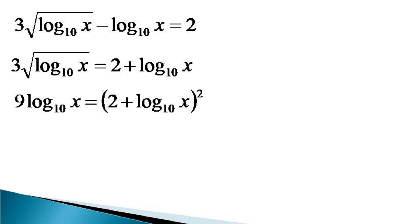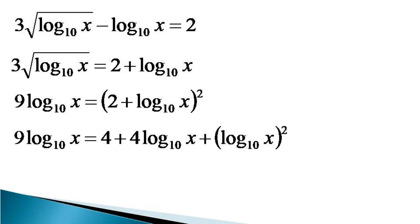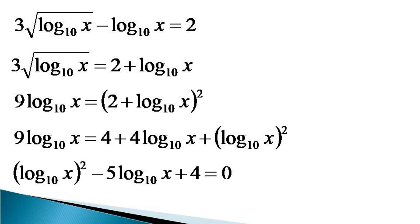Expanding the square on the right hand side, we get 9 log of x to the base 10, is equal to 4 plus 4 log of x to the base 10, plus log of x to the base 10 whole square. Bringing all the terms on one side, we get log of x to the base 10 whole square, minus 5 log of x to the base 10, plus 4 is equal to 0. This is a quadratic equation in log of x to the base 10.